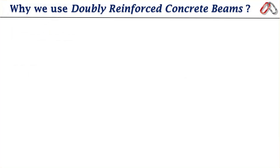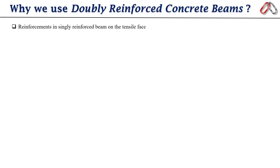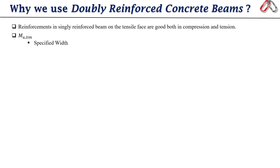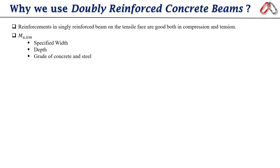Let's begin with why we use doubly reinforced beams. As we know, concrete has very good compressive strength and almost negligible tensile strength, which is why we use steel reinforcement on the tensile side. Reinforcements in a singly reinforced beam are good in both compression and tension, but these beams have their respective limiting moment of resistance based on specified width, fixed depth, and the grade of concrete and steel. A problem arises if a singly reinforced beam is subjected to a bending moment greater than the limiting moment of resistance, so we must increase the moment carrying capacity.